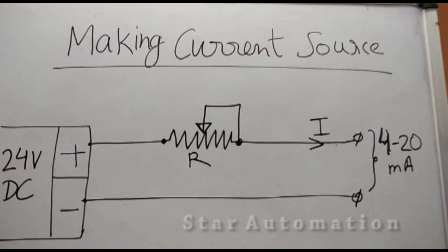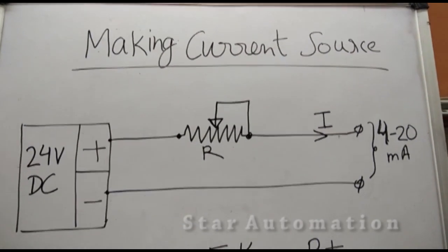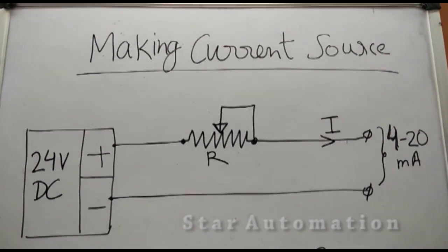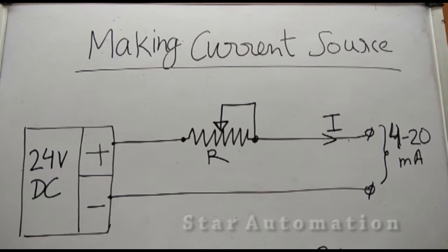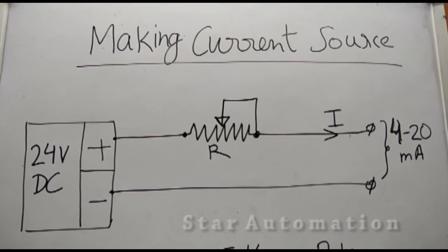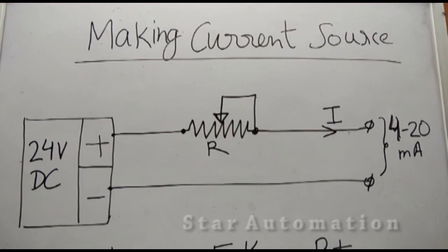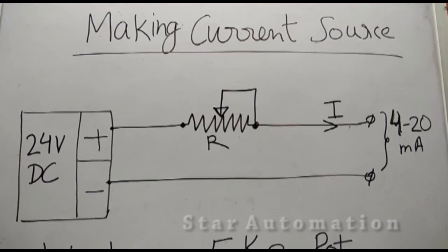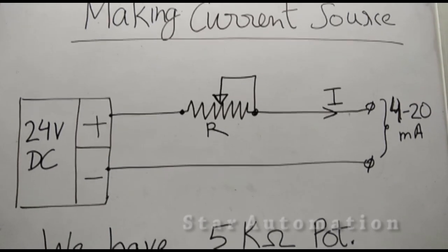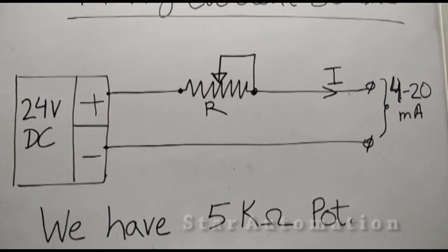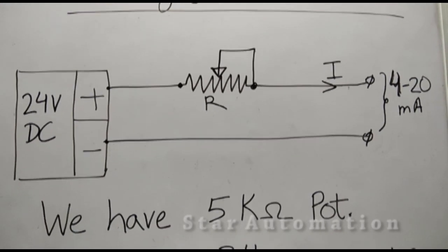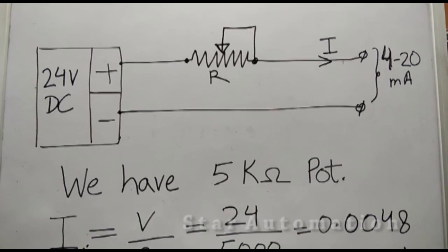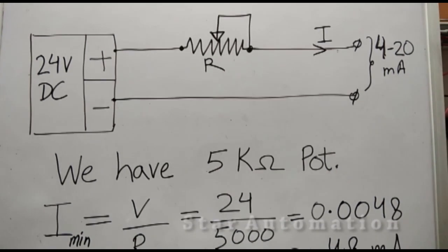In our diagram we have 24 volt DC plus and minus terminals, and a potentiometer R is indicated. We need a 4 to 20 mA signal, so we have a 5 kilo ohm pot.